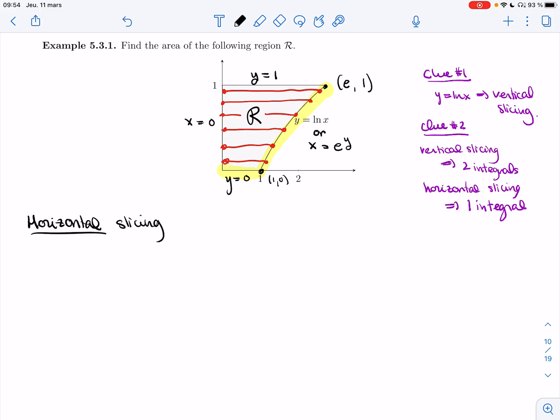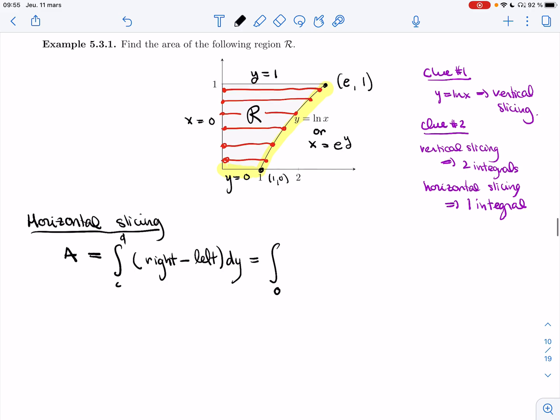If I use horizontal slicing, I'm going to get an area, which is the integral from c to d, right minus left, dy. So y is my variable. The smallest value of y is zero, so from zero. The biggest value of y is one. And then right is e to the y for the whole region. And left is zero.